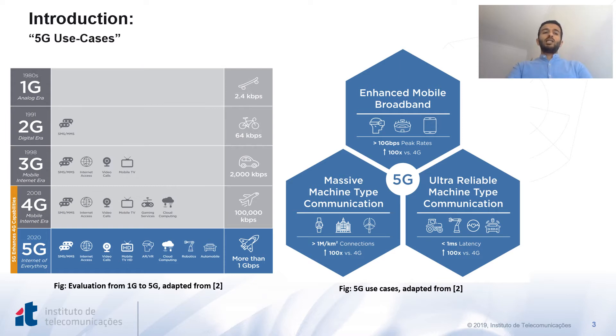First, enhanced mobile broadband communication, where 5G is expected to support 10 gigabit-per-second data-rate communication. Second, massive machine-type communication, like IoT networks or sensor networks, where 5G is supposed to accommodate user's density with more than 1 million devices per kilometer square. And third, ultra-reliable low-latency communication to support applications with high reliability and latency with less than 1 millisecond.